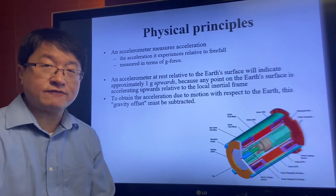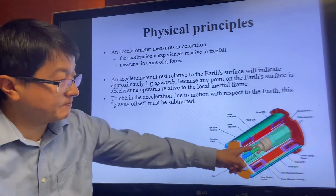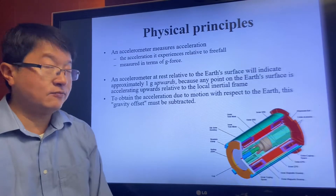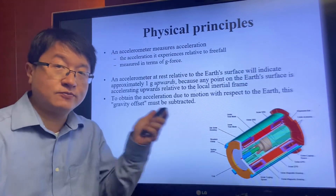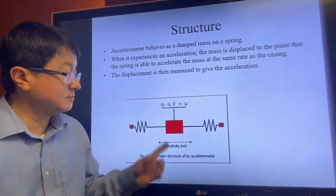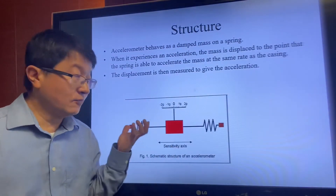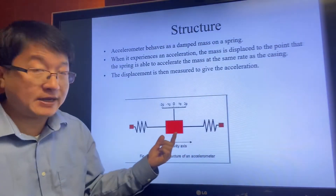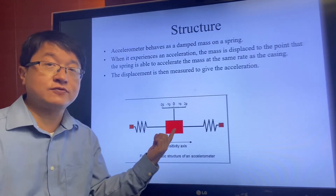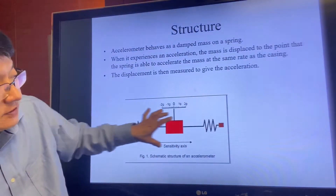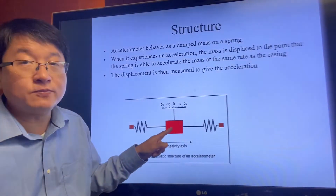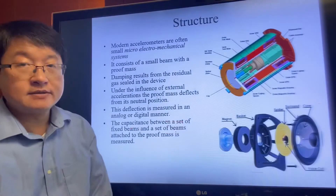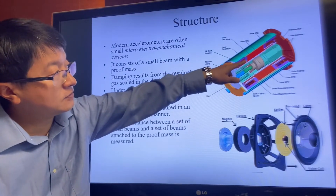The operating principle of an accelerometer is that there is a mass built inside it. When you move or shake the accelerometer, the mass, because of inertia, will vibrate. When you move the accelerometer to the right, by inertia this mass will move to the left, and vice versa. When we move to the left, this mass will move a little bit to the right and cause displacement. There are some coils surrounding the mass.